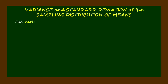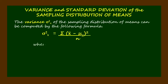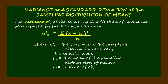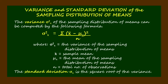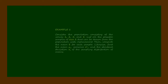The variance sigma squared sub x of the sampling distribution of means can be computed by the following formula, where sigma squared sub x equals the variance of the sampling distribution of means, bar x equals sample mean, mu sub x equals the mean of the sampling distribution of means, n equals total number of observations. The standard deviation sigma sub x is the square root of the variance.